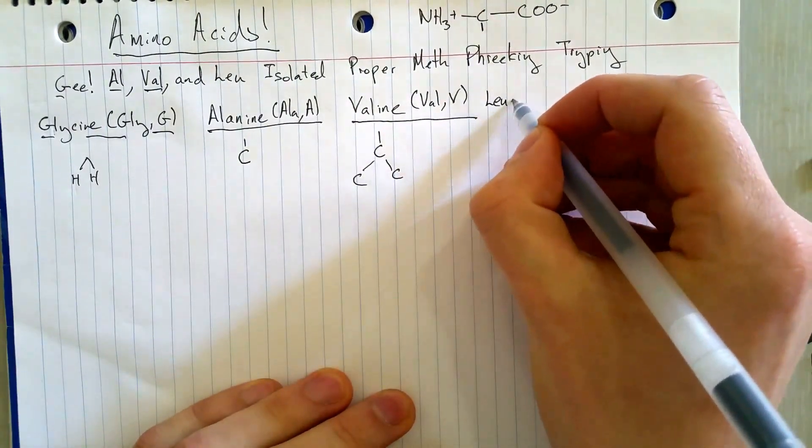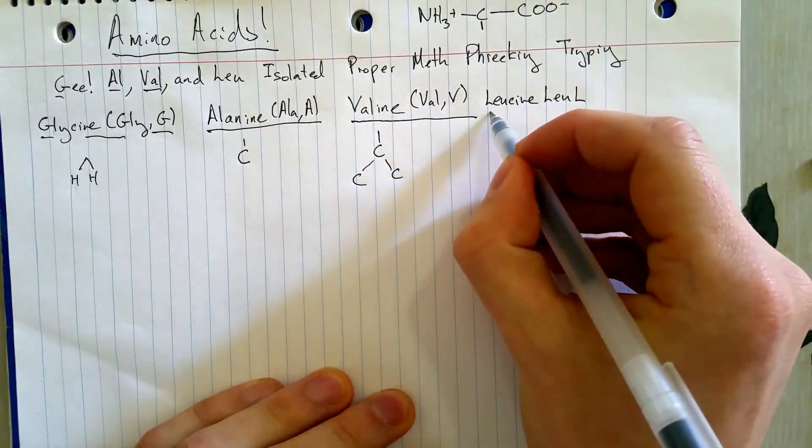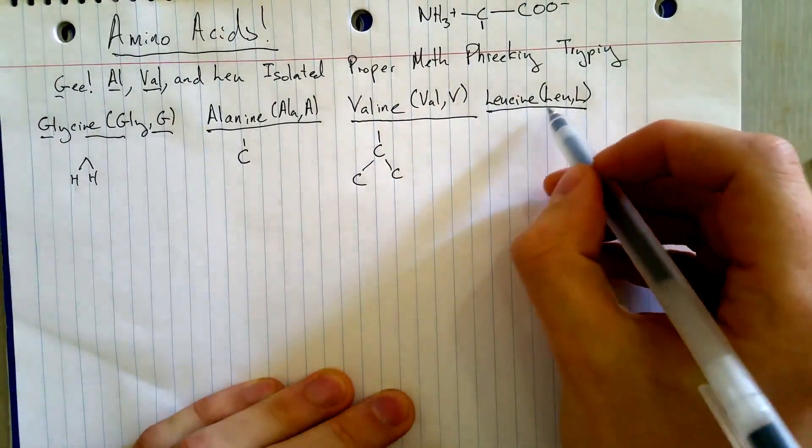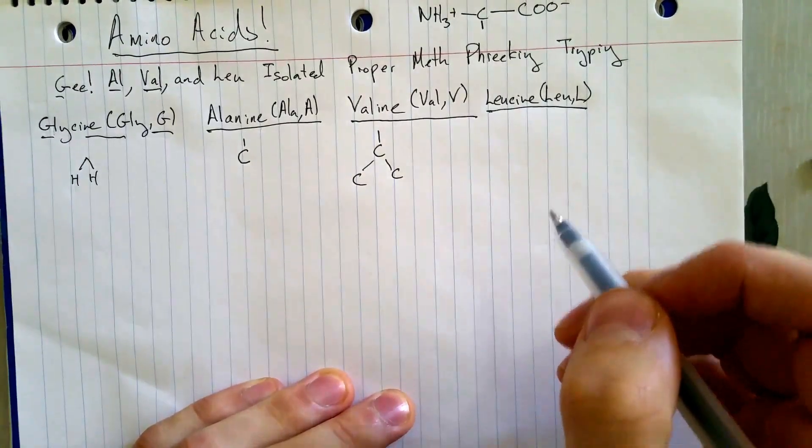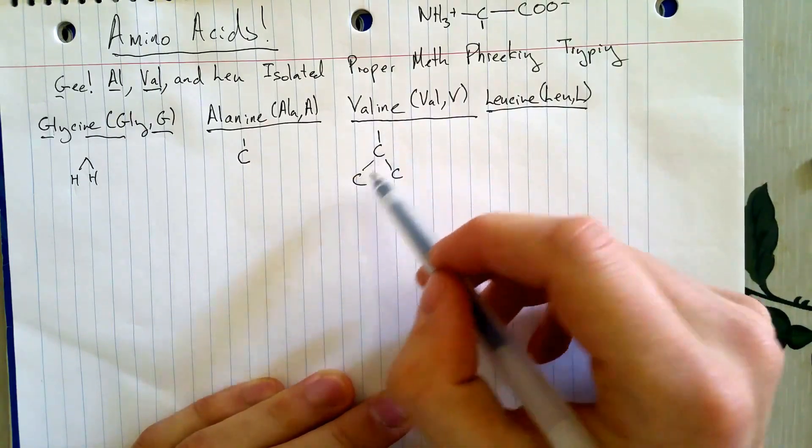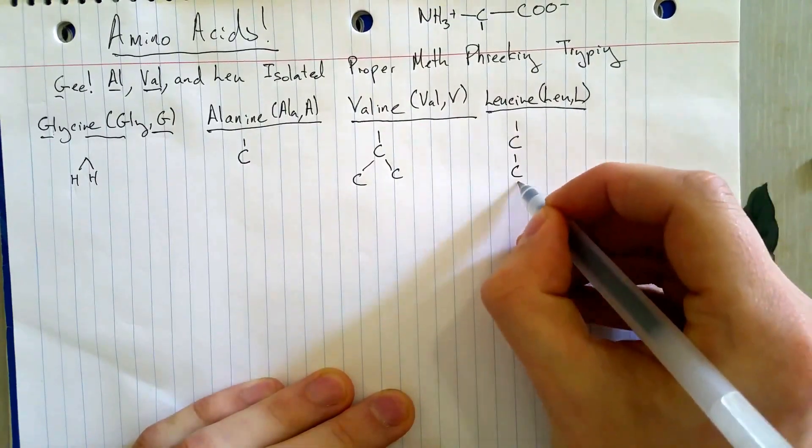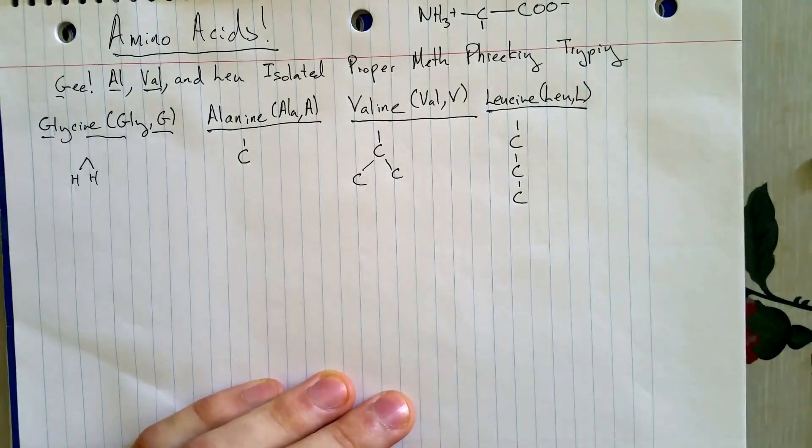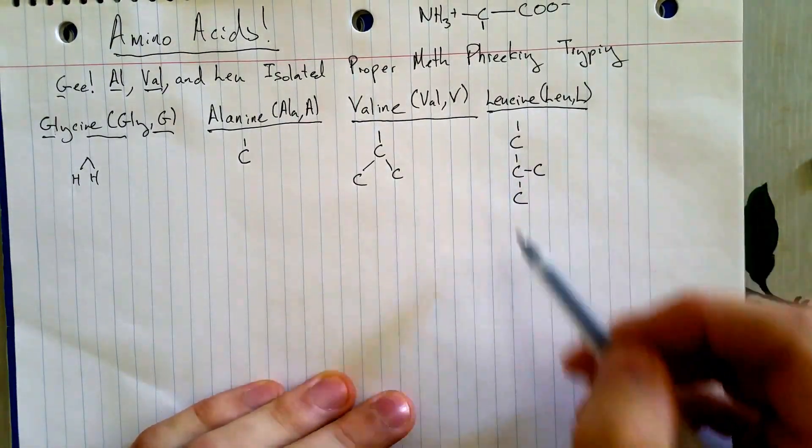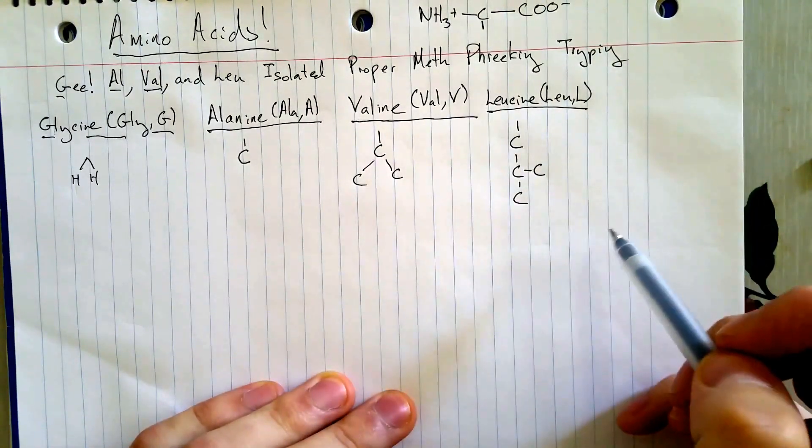Then we got leucine. Leu. Very straightforward with its abbreviation and its one-letter code L. So valine was a two-carbon chain. Leucine, we're getting a little more complicated now. It's a three-carbon chain, and then it's got an extra carbon coming off of its middle carbon here. So you could maybe think of that as like an L or just remember it.